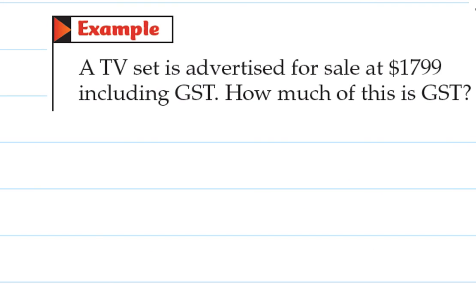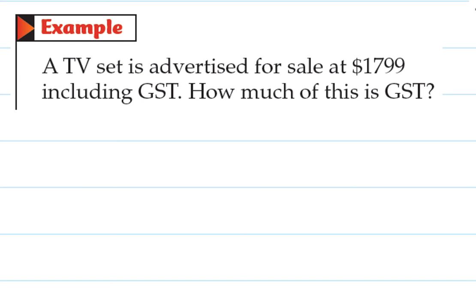Okay, one more example very quickly. A TV set is advertised for sale at $1799 including GST. How much of this is GST? So this amount has GST in it already. So this isn't quite as straightforward as you might think. I think a lot of you would probably jump in and go 1799 times 0.15. But that won't work because this amount already has GST in it.